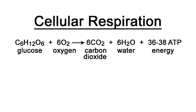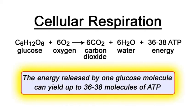The net effect of the processes of cellular respiration is to release a total theoretical yield of between 36 to 38 molecules of ATP for every molecule of glucose converted into carbon dioxide and water.